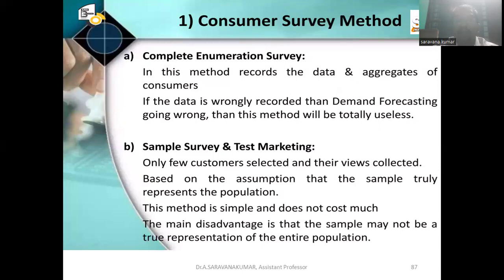In the sample survey method, for example, if you have 100 customers entering a hotel, you collect feedback from only 10 of them as your sample. Those 10 samples may or may not be representative. Only a few customers are selected, and data is collected based on the assumption that the sample truly represents the population. This method is simple and does not cost much. The main disadvantage is that the sample may not truly represent the entire population.